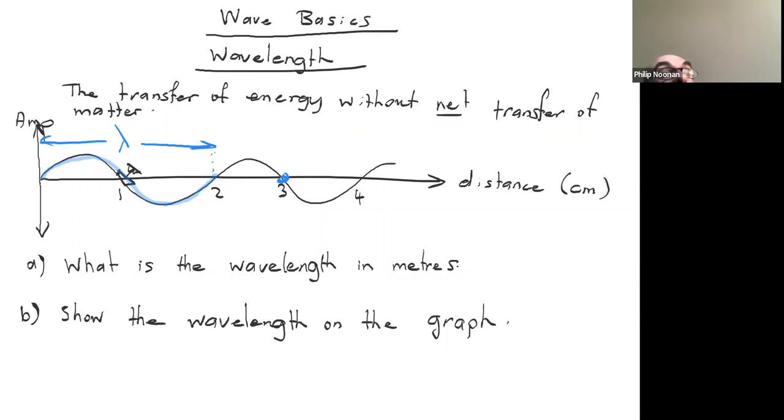All right, so we've marked the wavelength on the graph, and then we'll look at part A. What is the wavelength in meters? And remember, a wavelength can be seen as a snapshot. It's like a photograph of a waveform at one frozen moment in time. And to get the wavelength, we just simply read it off the graph.